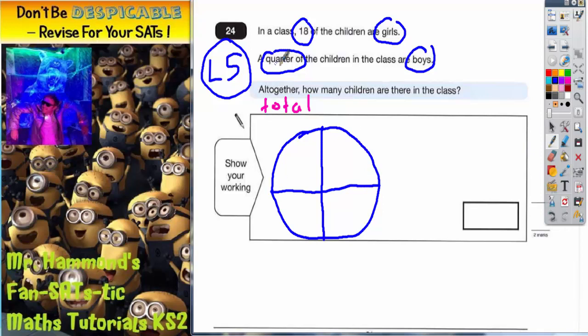A quarter of the children are boys, so one quarter must be boys—B for boys. Now if you think about it, if a quarter is boys, the rest of the class, which is three quarters, must be girls. It doesn't say that, but it must be. So the rest of the class must be girls: G, G, G.